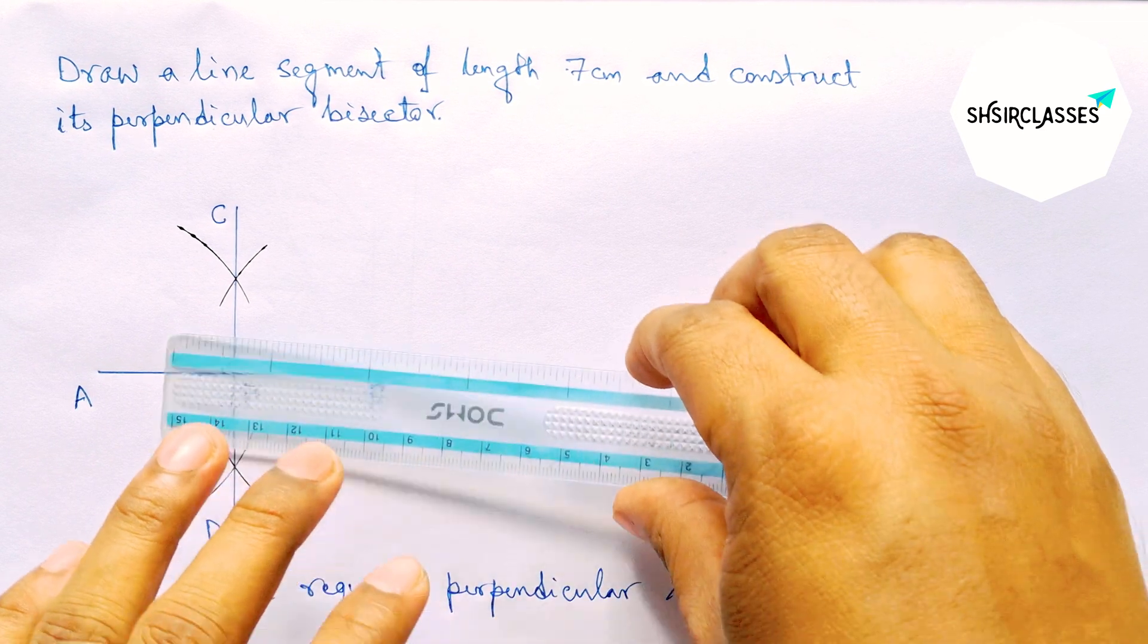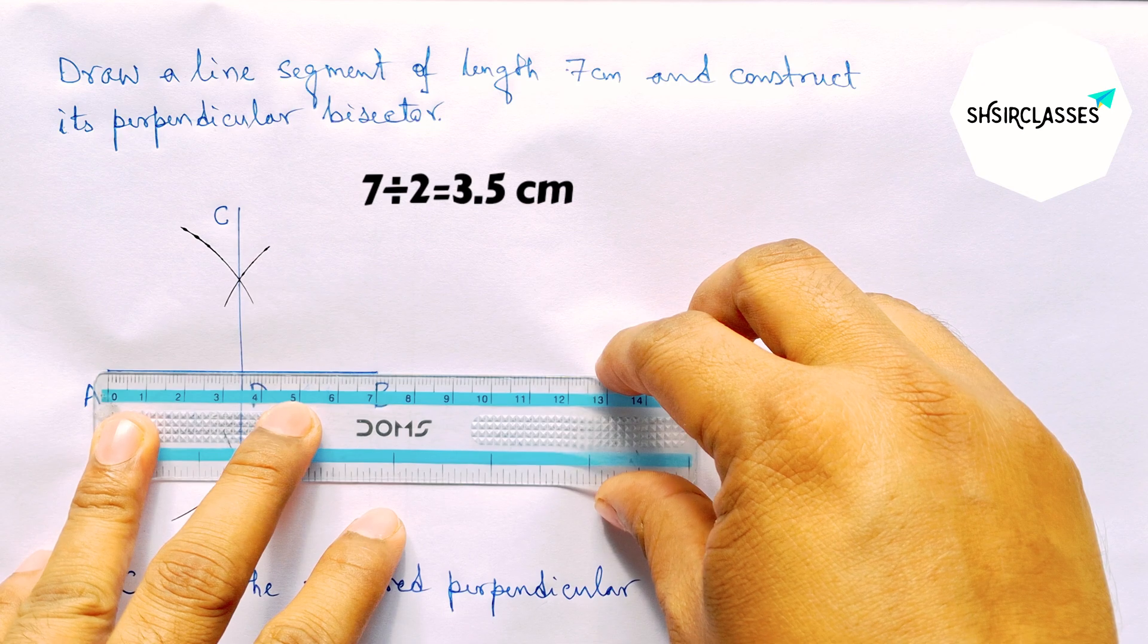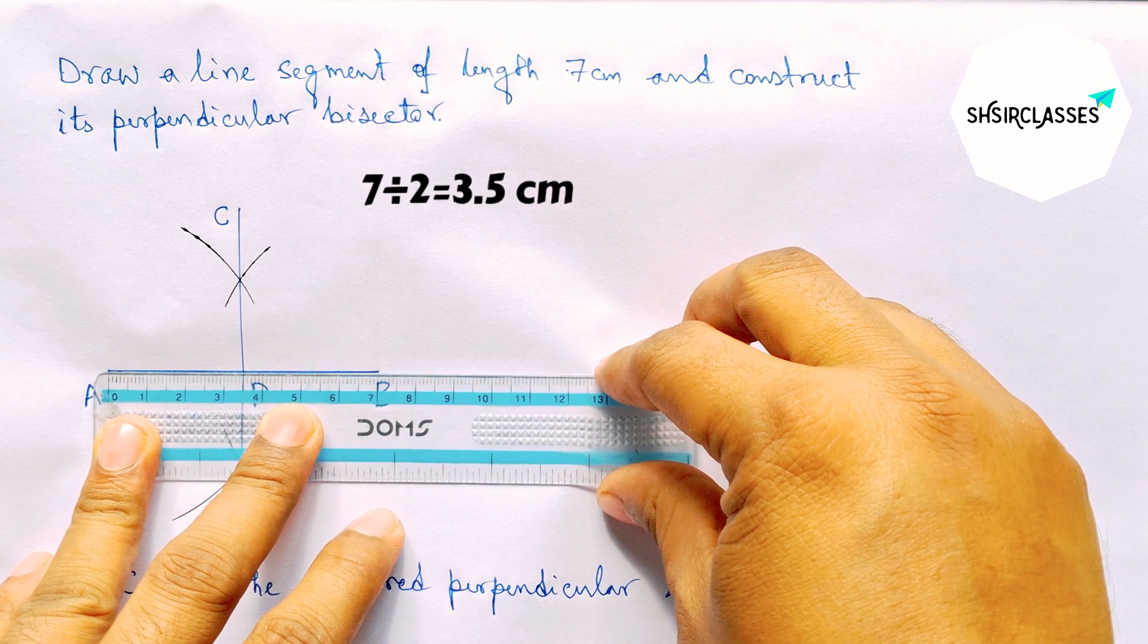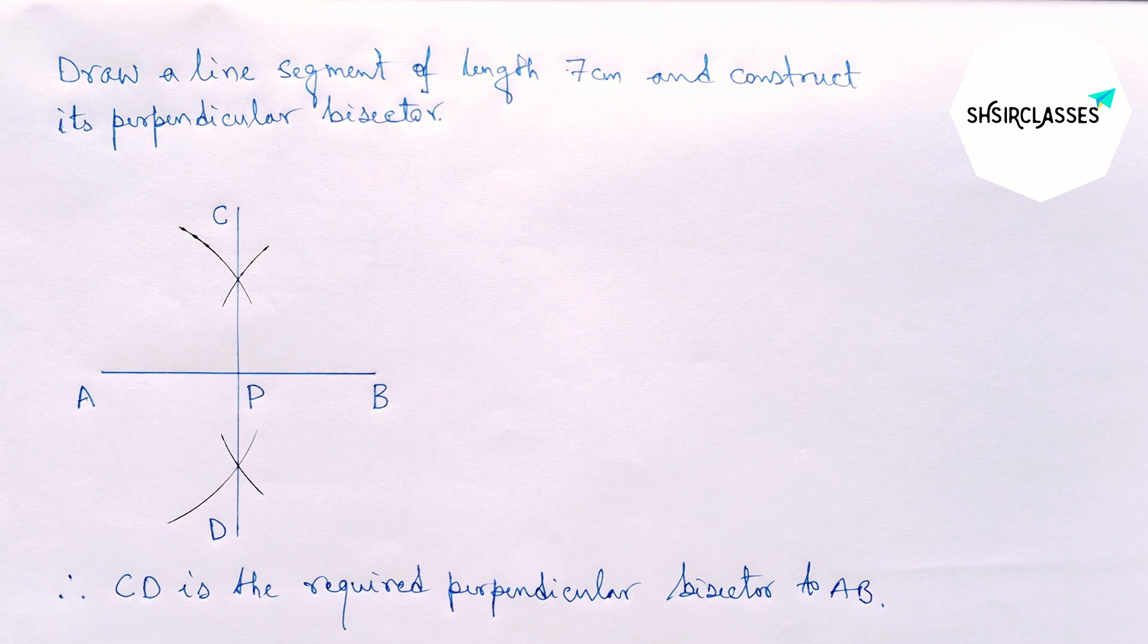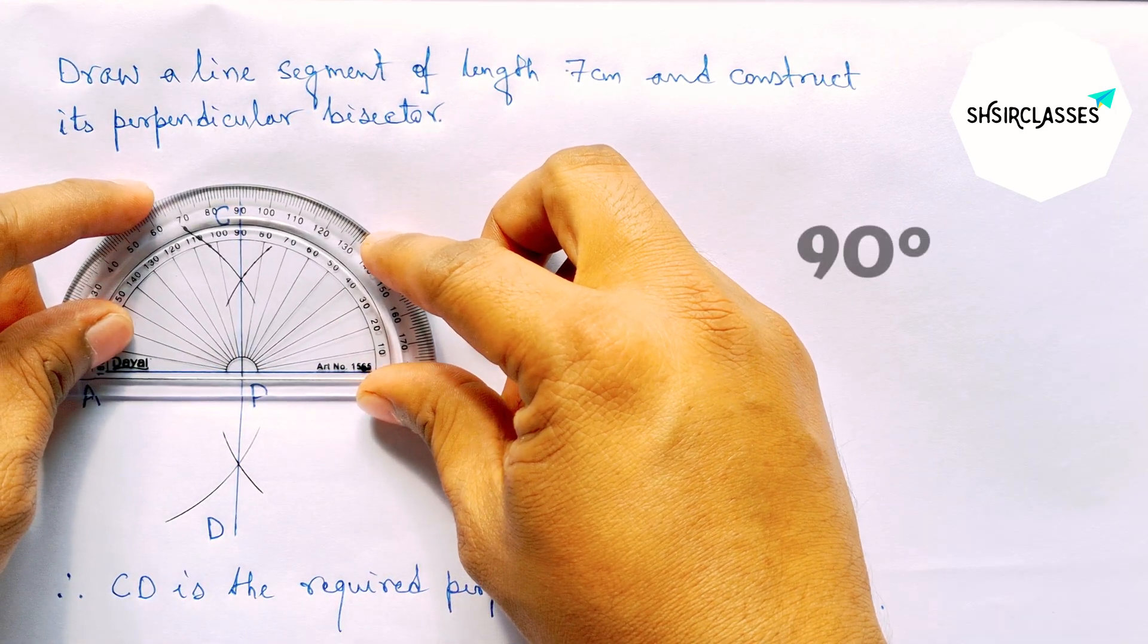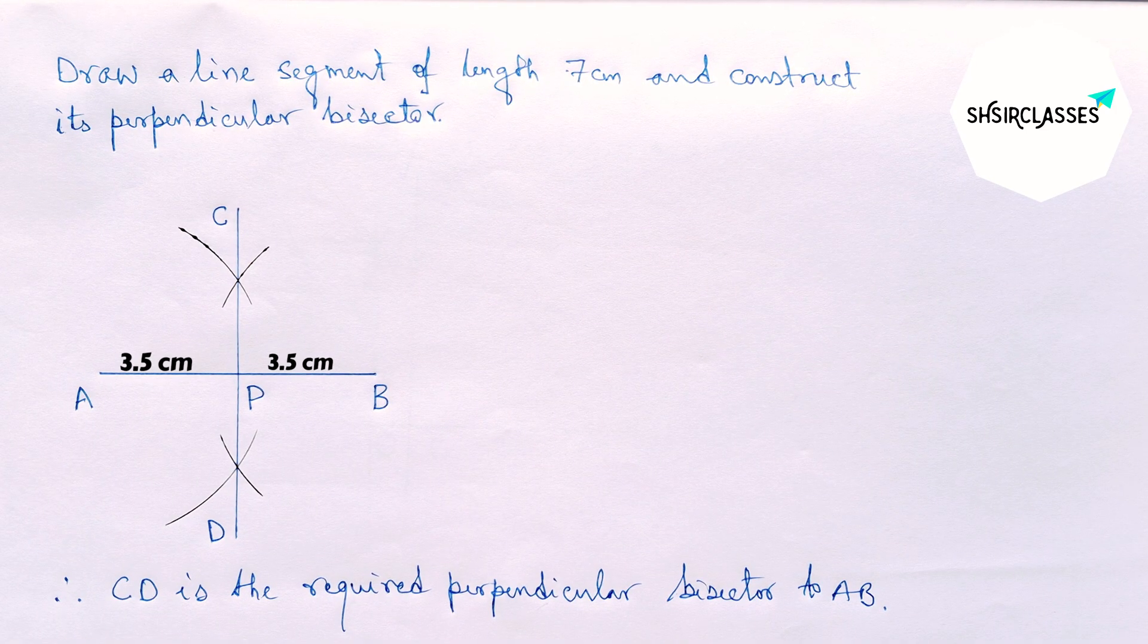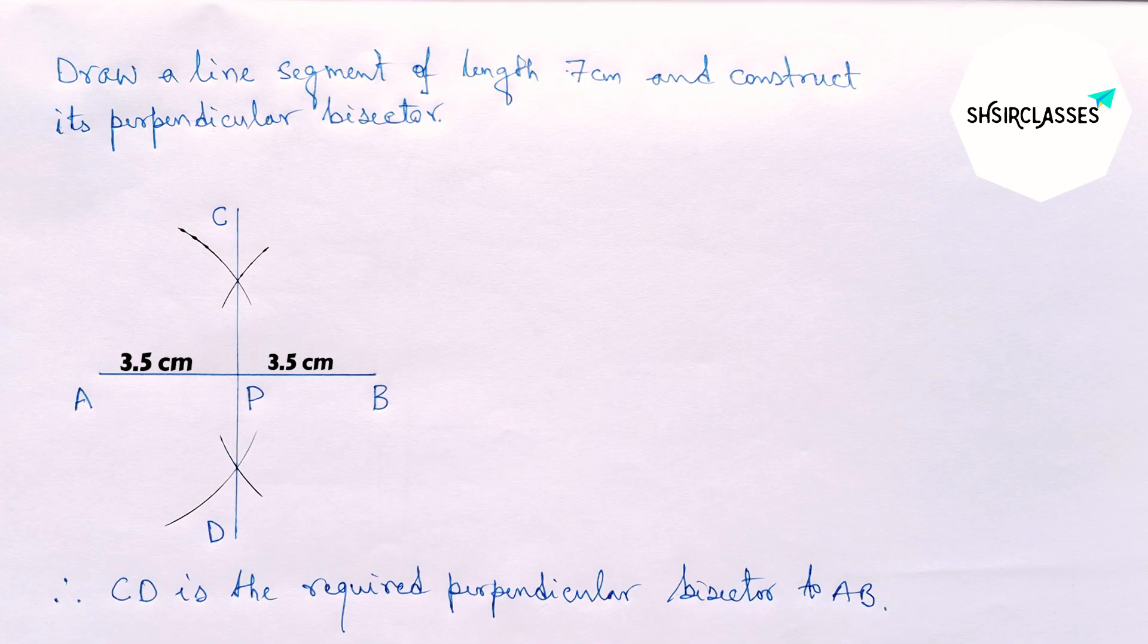Next, let us check whether AB bisect perfectly or not. So here bisect AB perfectly and this is also a 90 degree angle. That's mean perpendicular. So that's all.